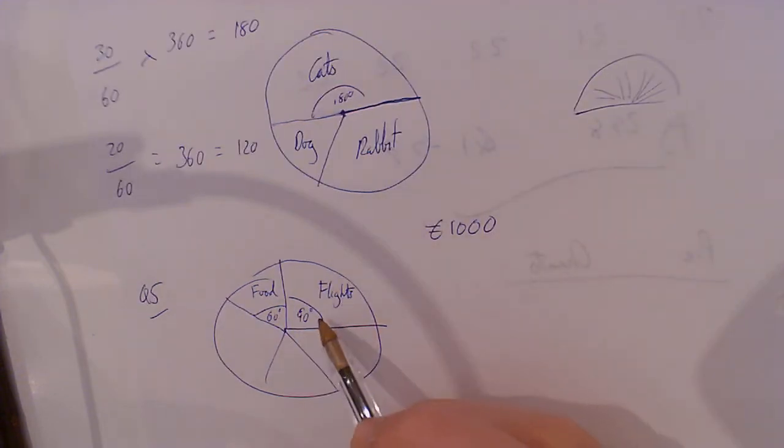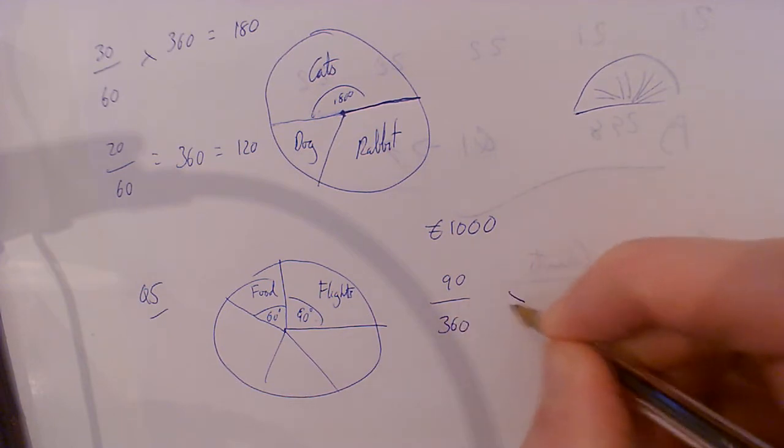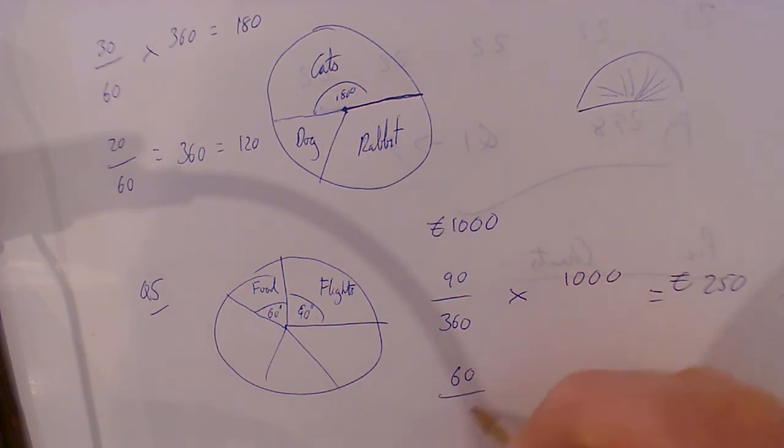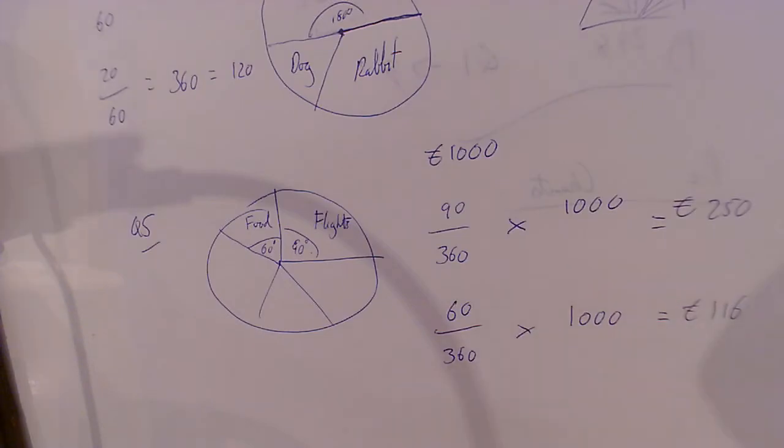Well, flights is 90 degrees out of 360, and you multiply it by the thousand. Put it in your calculator and that's 250 euro on flights. Food would be 60 over 360 times 1,000, and that's 116 point 67. Always round money to two decimals.